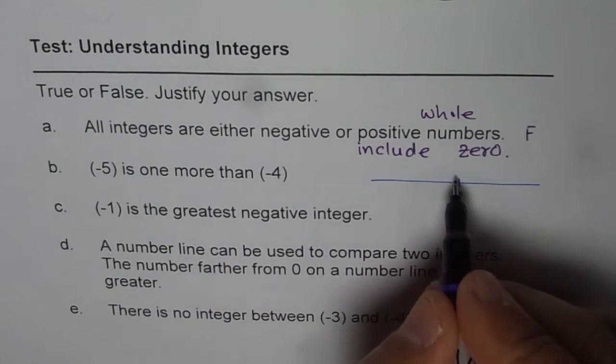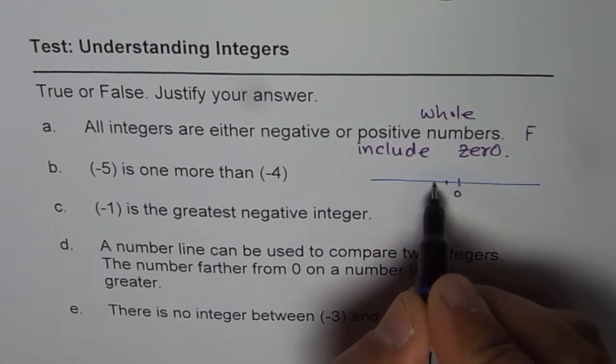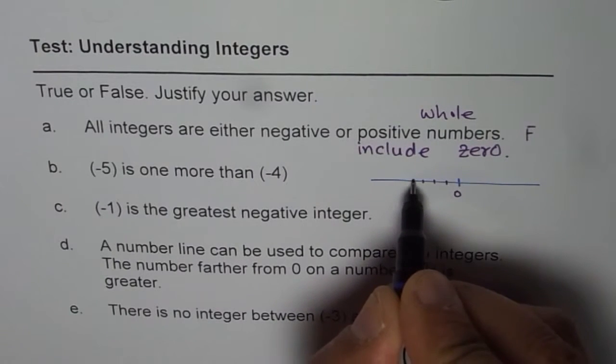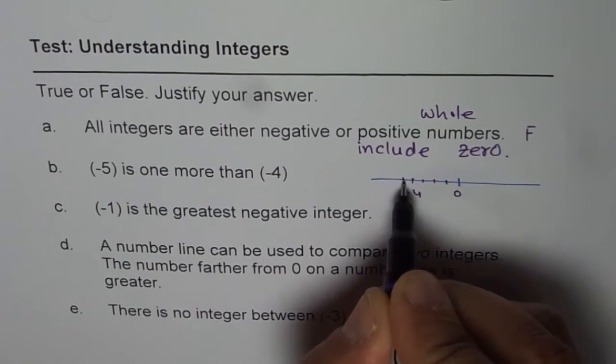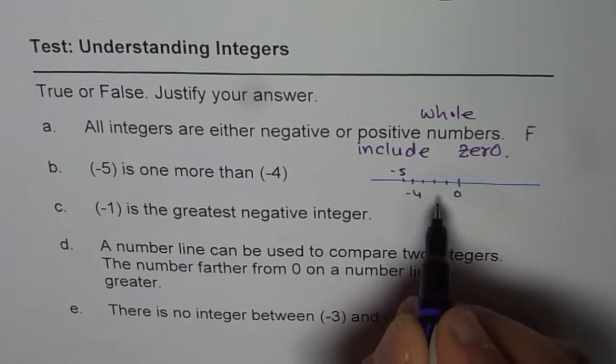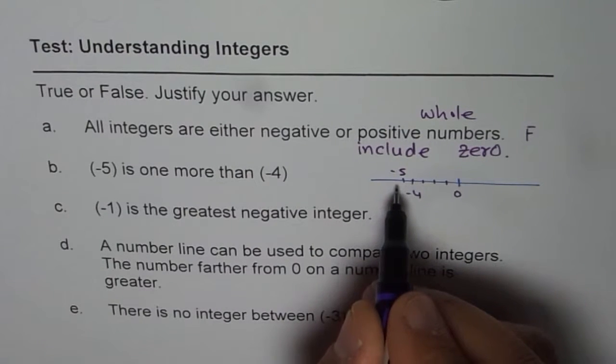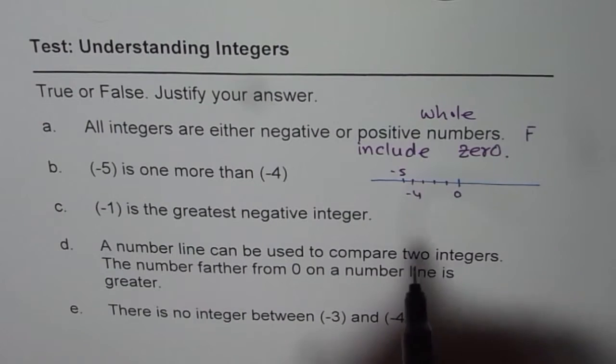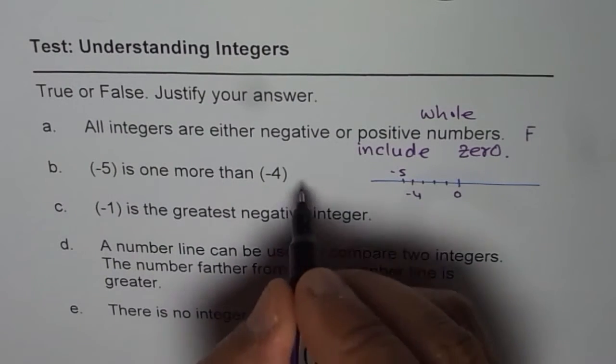If you see a number line, you have 0 here. As you move left, you will get minus 1, minus 2, minus 3, minus 4 and then minus 5. Numbers on the left are smaller. Numbers on the right are greater. So, this statement is also false.